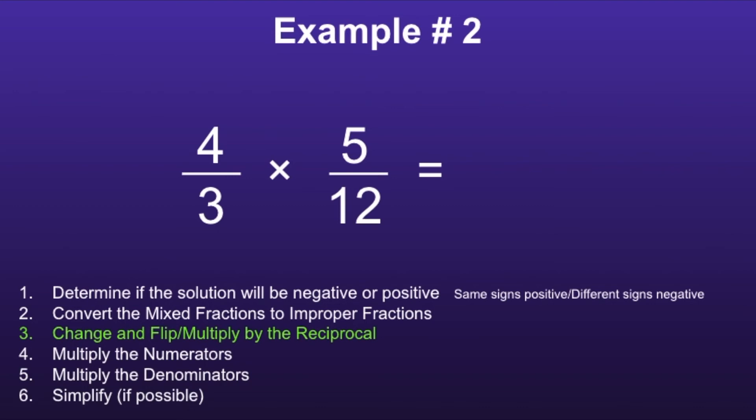This moves us on to step number four: multiply the numerators. And four times five is equal to twenty. Step five: multiply the denominators. Three times twelve is equal to thirty-six.